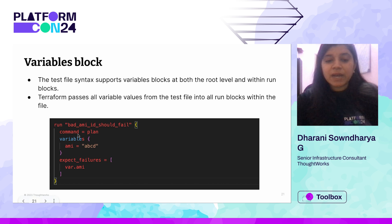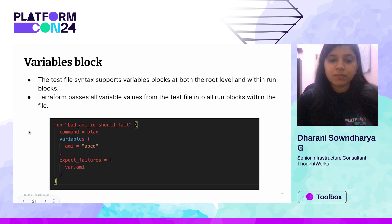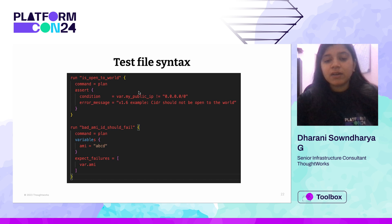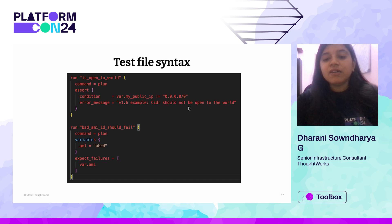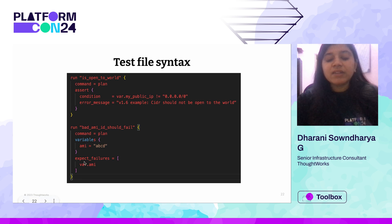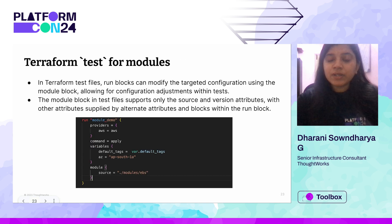You can add command equal to plan or command equal to apply inside a run block. Command equal to plan runs a terraform plan; command equal to apply runs a terraform apply and then runs test cases against it. For example, a condition checking whether a variable is 0.0.0.0/0 — if it is equal to that, the terraform test will fail with the message that the CIDR should not be open to the world. You can access variables from outside or inside the run block.